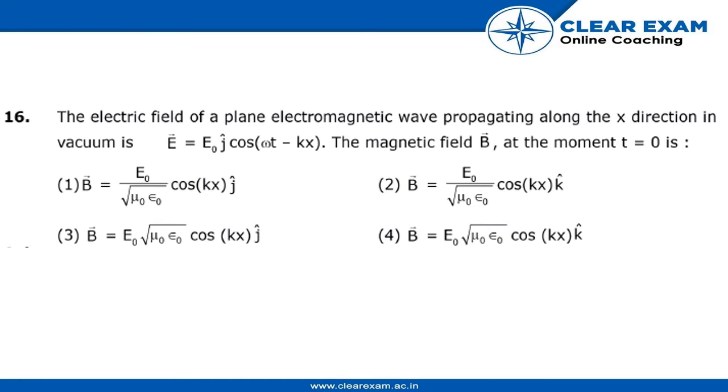The electric field of a plane electromagnetic wave propagating along the X direction in vacuum is E = E₀ cos(ωt - kx) ĵ. The magnetic field B at the moment t = 0 is what we need to find.